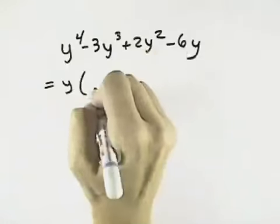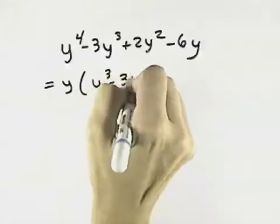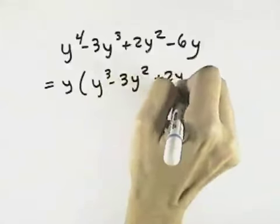So dividing y to the first power out of each term, we're left with y cubed minus 3y squared plus 2y minus 6.